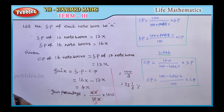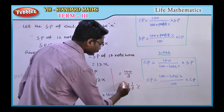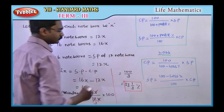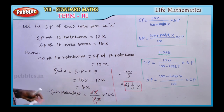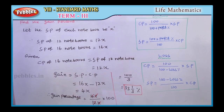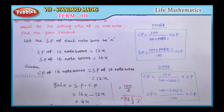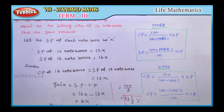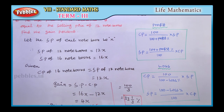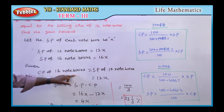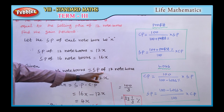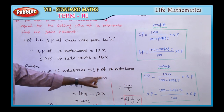So the gain percentage is 33⅓%. To recap: the condition is cost price of 16 notebooks equals selling price of 12 notebooks. Let the selling price of 1 notebook be X. Therefore, selling price of 12 notebooks is 12X, and selling price of 16 notebooks is 16X.